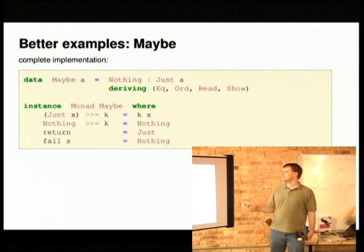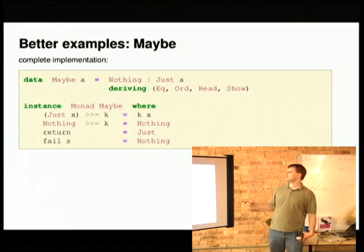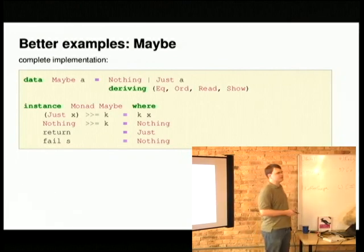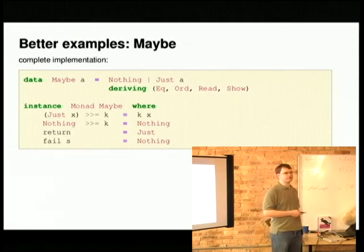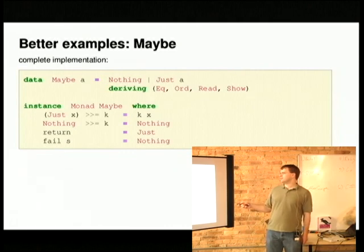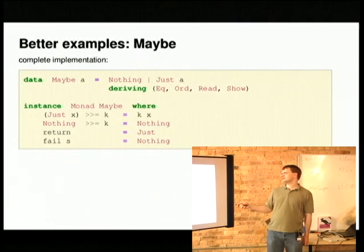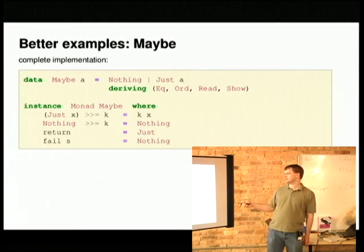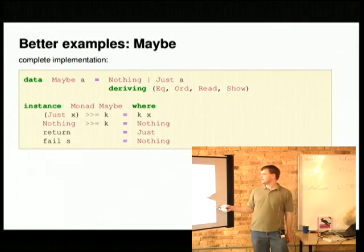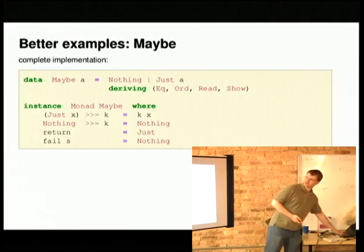I wanted to talk about this from a much simpler monad, the maybe monad, which is a different way of doing null types or not-a-number types, things that you would do in Python with none. And here you declare that maybe is an instance of monad because if you're given the nothing version of maybe and you're trying to do something else after it, you always get nothing. Otherwise, you get the something else you're doing. And the others are as trivial as they can be.